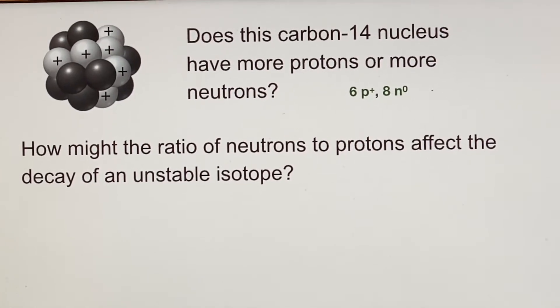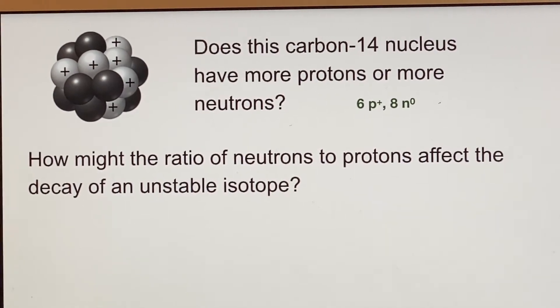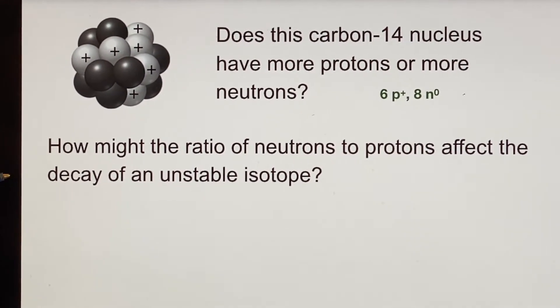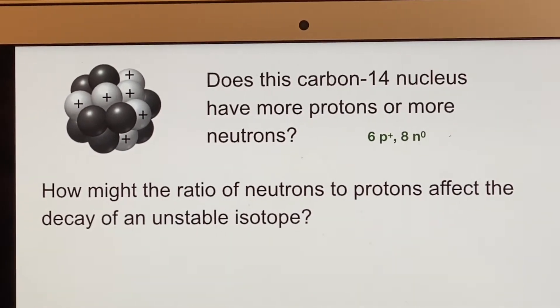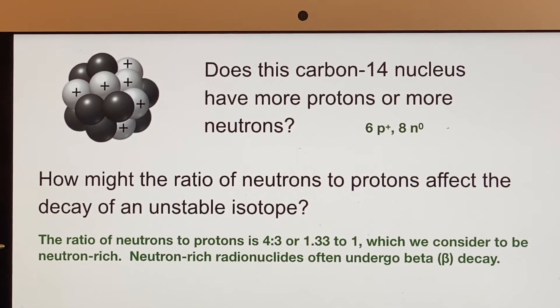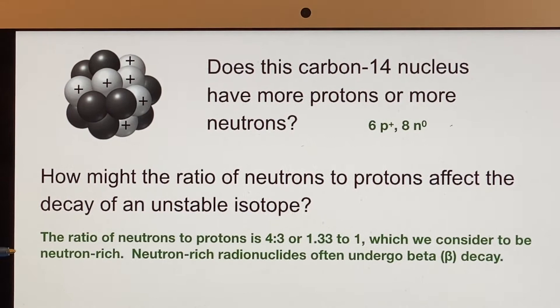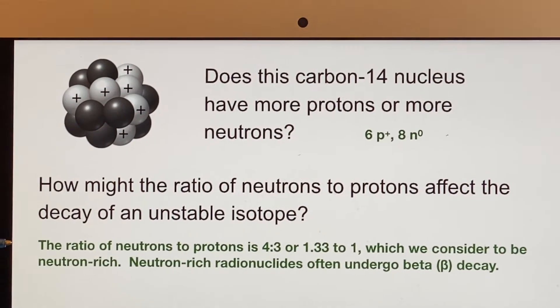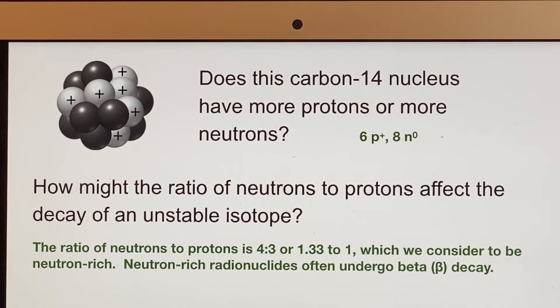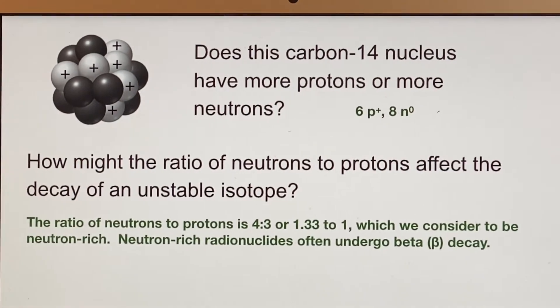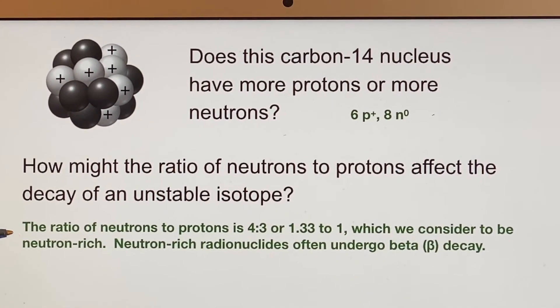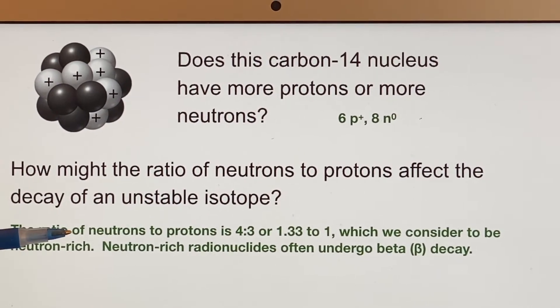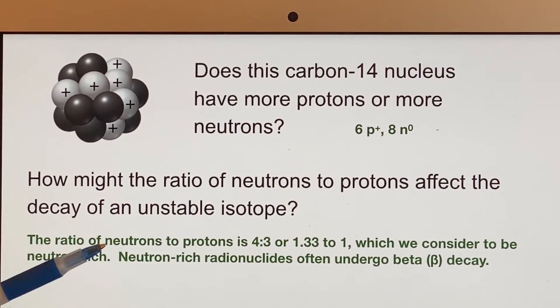How might the ratio of neutrons to protons affect the decay of an unstable isotope? Well, we definitely didn't talk about that in Chem 2. It turns out that there's a certain specific range that makes it stable. And so you can either have too many neutrons compared to protons.